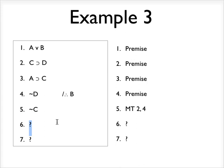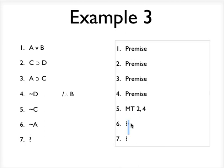Namely, I can derive not A by modus tollens on lines, this time it's 3 and 5. Okay, again, I'm trying to get B, and I started out saying, well, if I had not A, I could do a disjunctive syllogism with line 1 to derive the conclusion B. But now I do have not A, I've derived it.